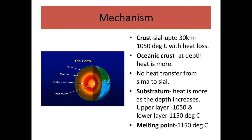The mechanism of this theory states that the crust is made up of sial and extends to a depth of 30 kilometers, where the temperature is around 1050 degrees Celsius with heat loss. In oceanic crust, heat increases with depth. There is no heat transfer from sima to sial. In the substratum, the upper layer is at 1050 degrees Celsius whereas the lower layer of the substratum is around 1150 degrees Celsius.